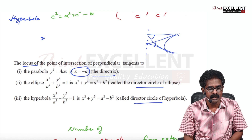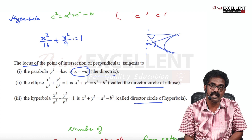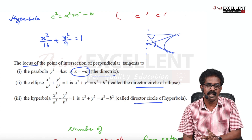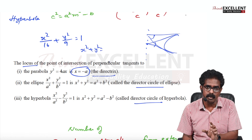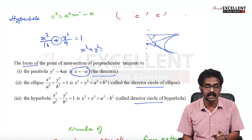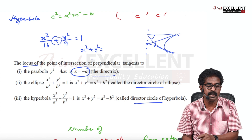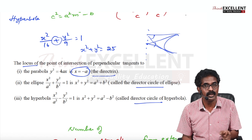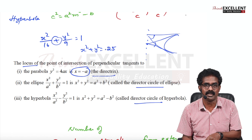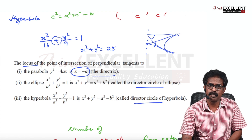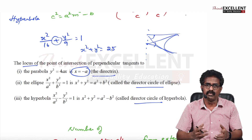For example: X²/16 + Y²/9 = 1 — find the radius of the director's circle. It has a plus sign, so it is an ellipse. For ellipse, director's circle is X² + Y² = A² + B² = 16 + 9 = 25. So R² = 25, therefore R = 5. Questions can be framed like this — just learn and try to understand everything as much as possible.